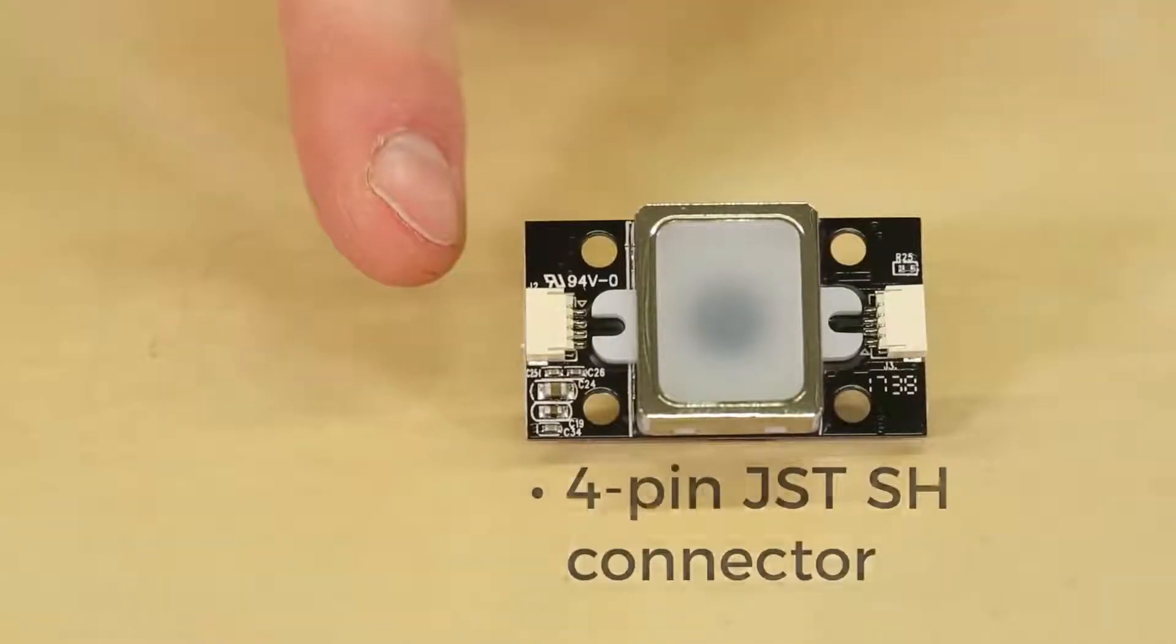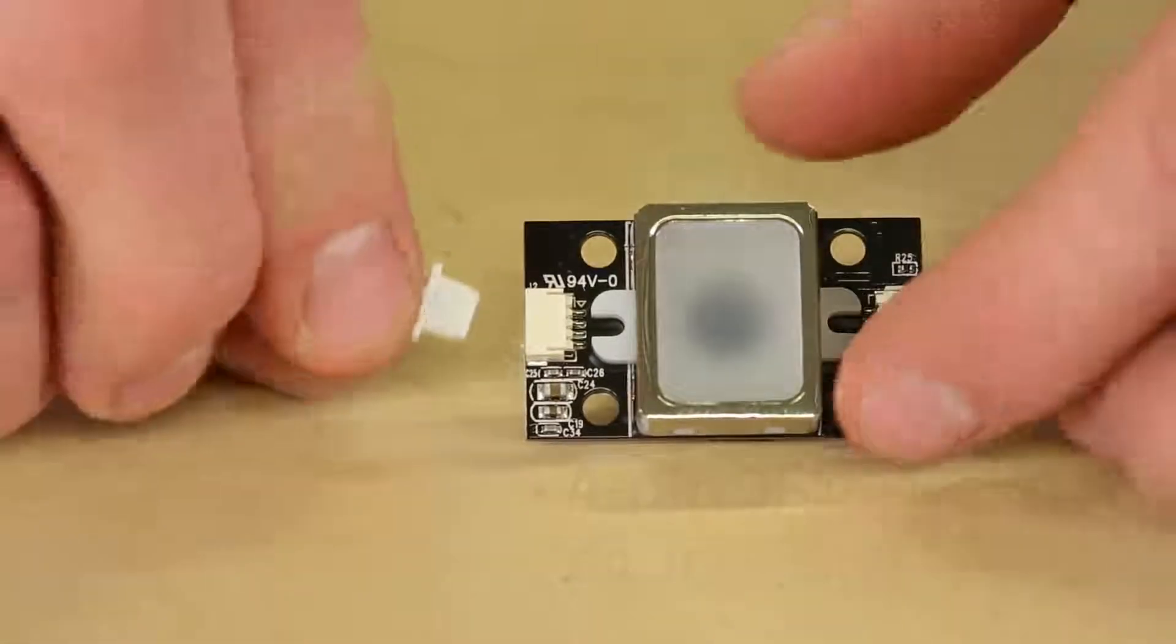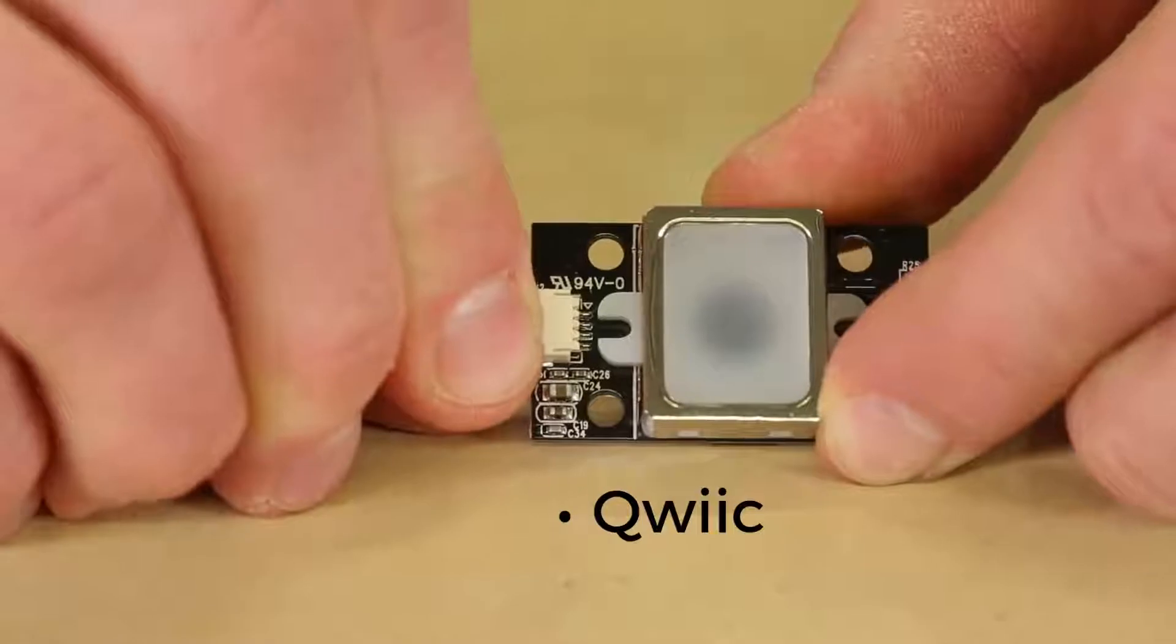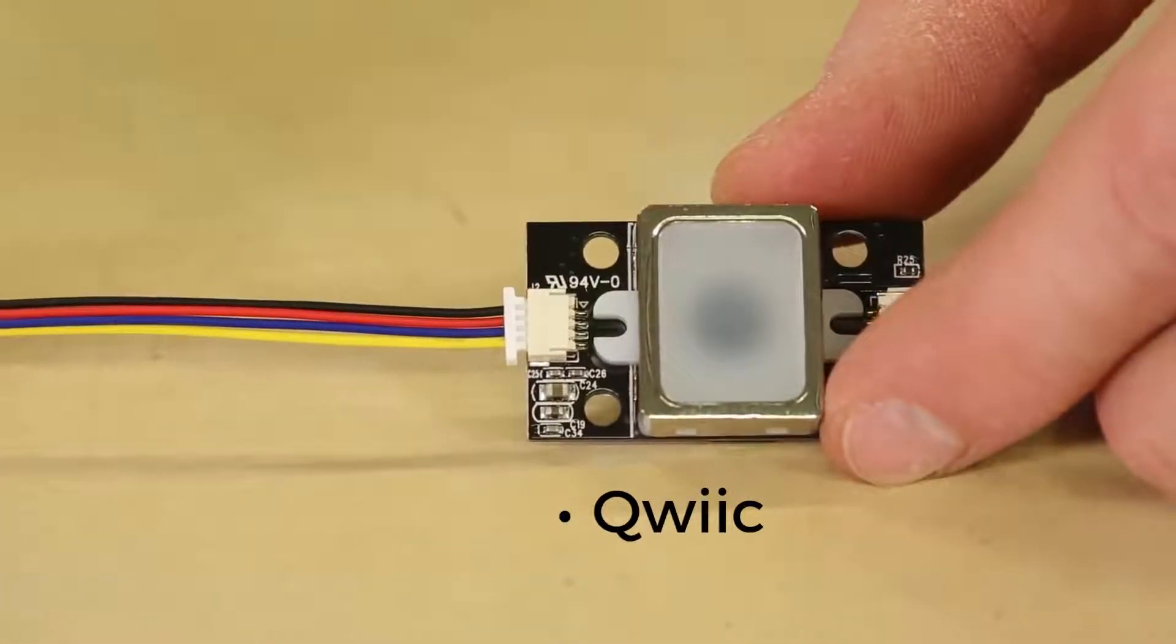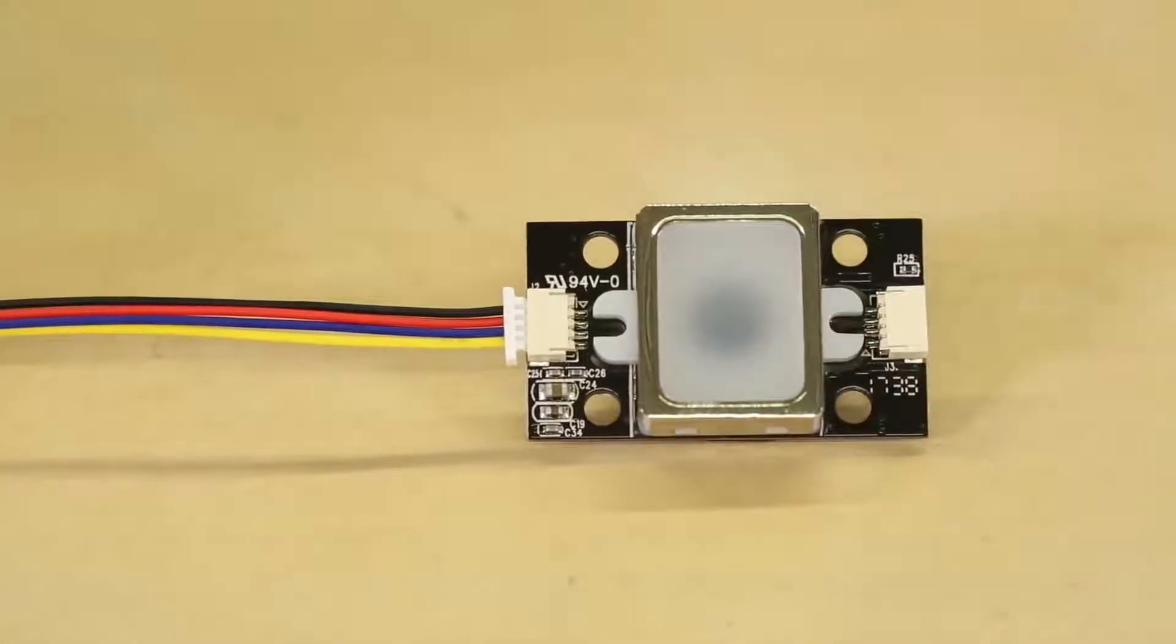You'll need to connect a 4-pin JSTSH connector to break out the lines on the fingerprint scanner. SparkFun's Qwiic cables will work as well. Just note that the colors don't quite line up with voltage, ground, and data lines. If you're connecting it to a part with 5-volt logic, you'll need to use a level shifter to get it down to 3.3 volts.